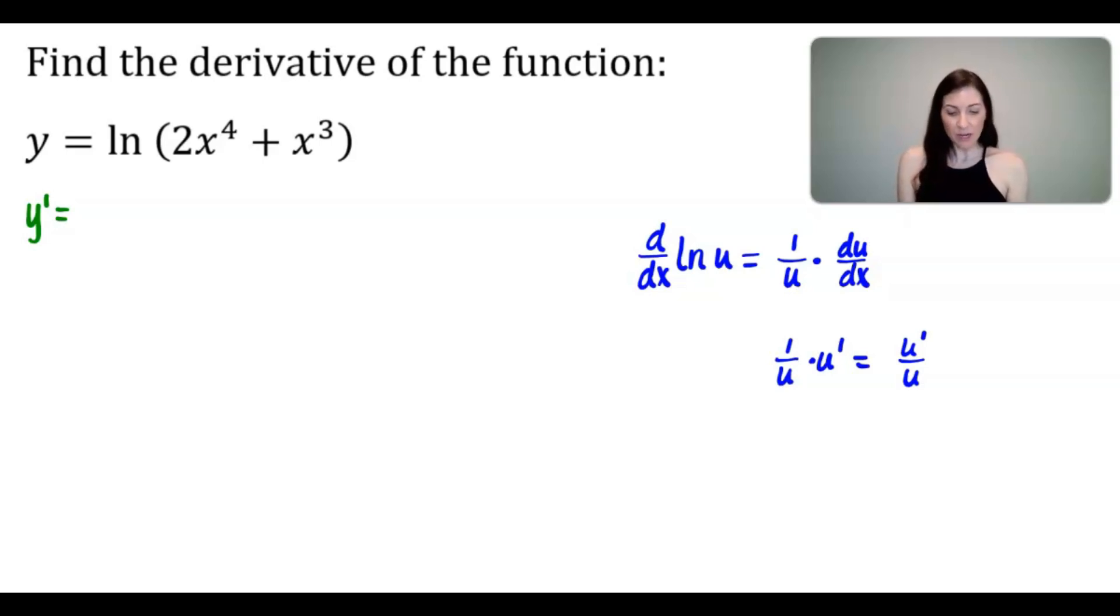And as you can see over here, it would first be 1 divided by, and I'm going to call this my u, if you think about that in terms of the formula that I provided to you on the right. So I would take 1 divided by 2x to the 4th plus x cubed, and then I would multiply this by the derivative of that u part. And for the derivative of that part, I'm going to use power rule, and so that would be 8x to the 3rd plus 3x squared.